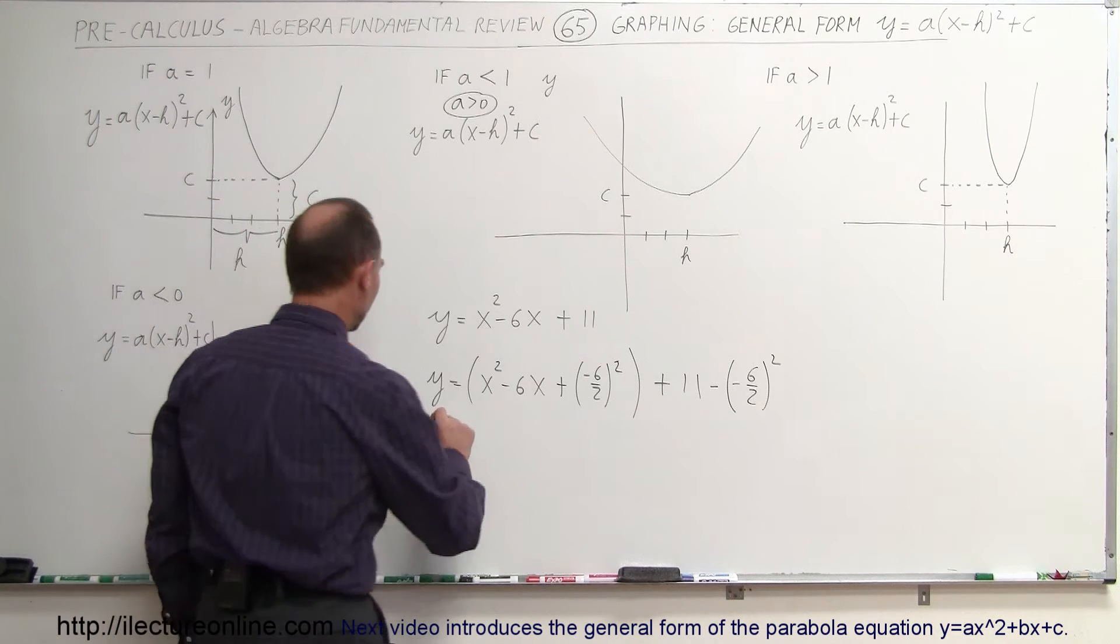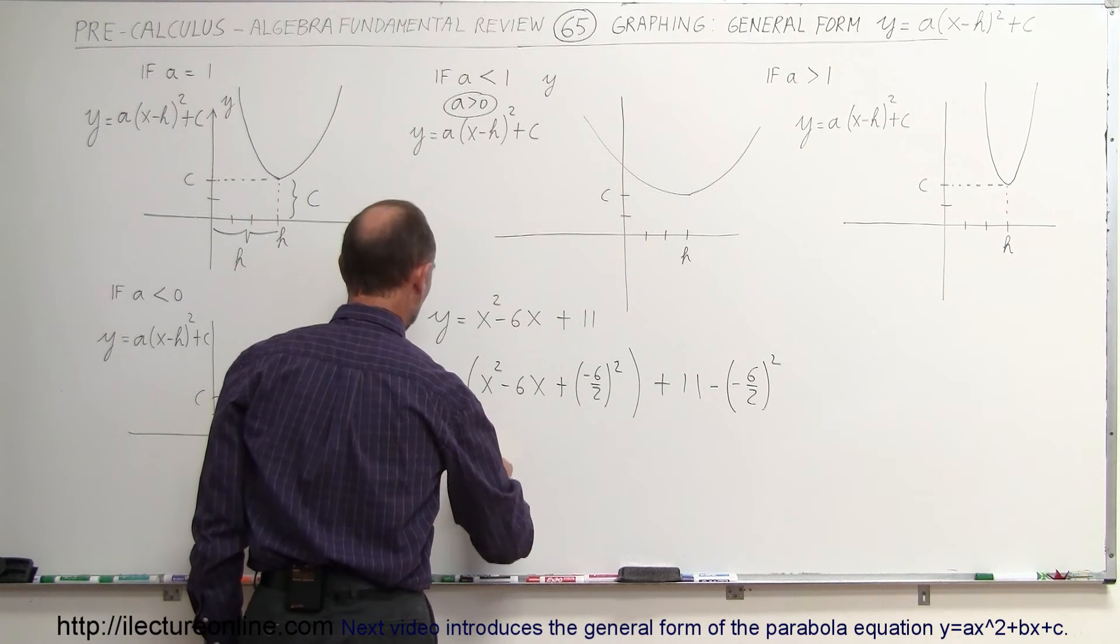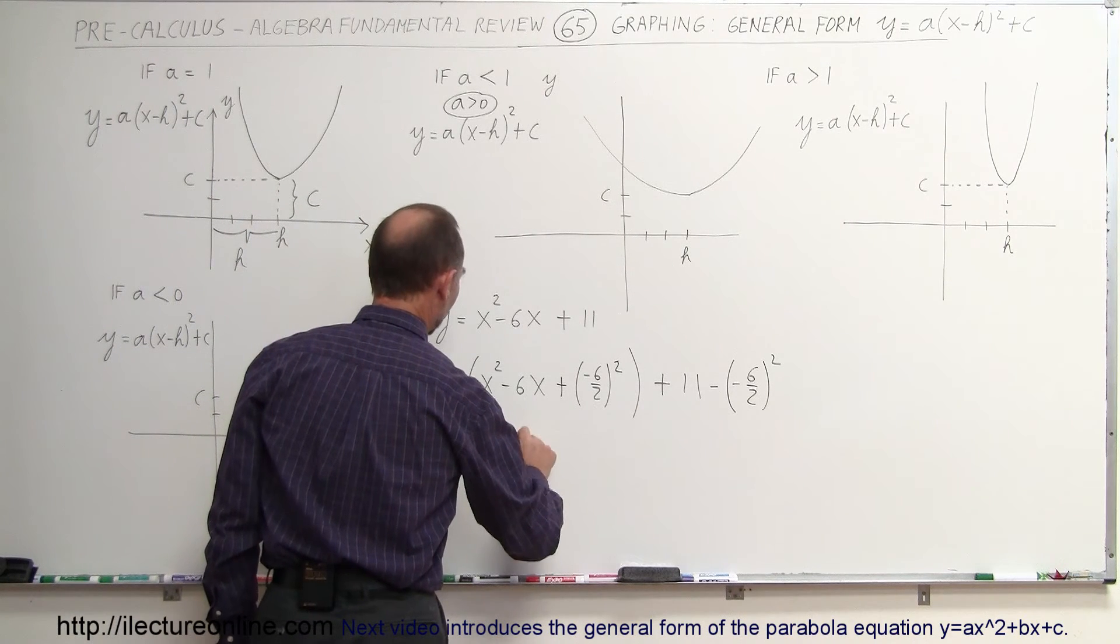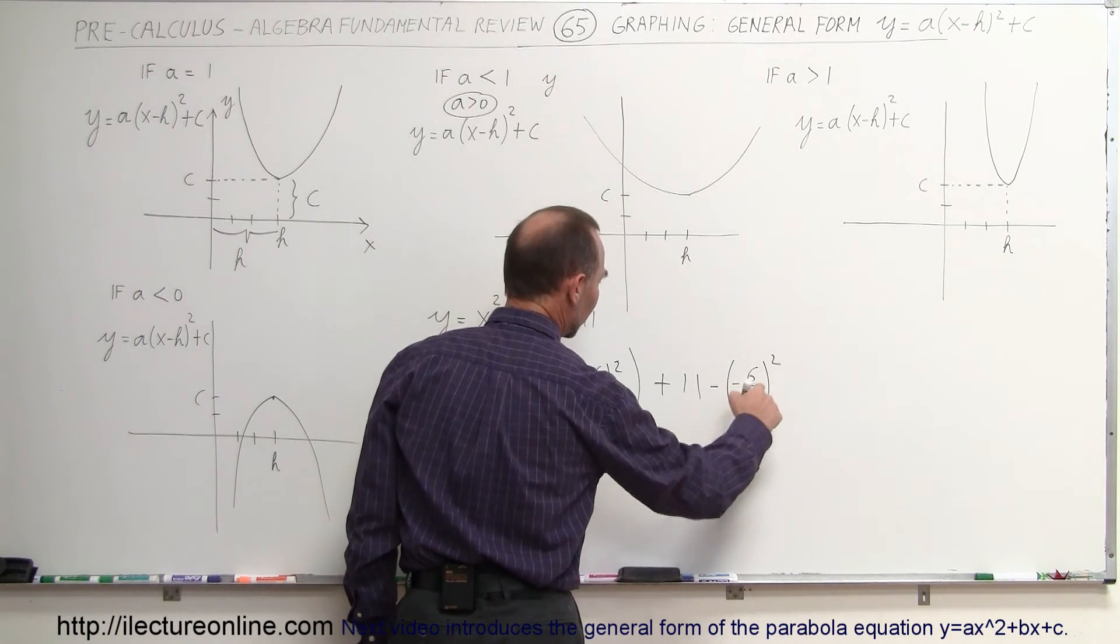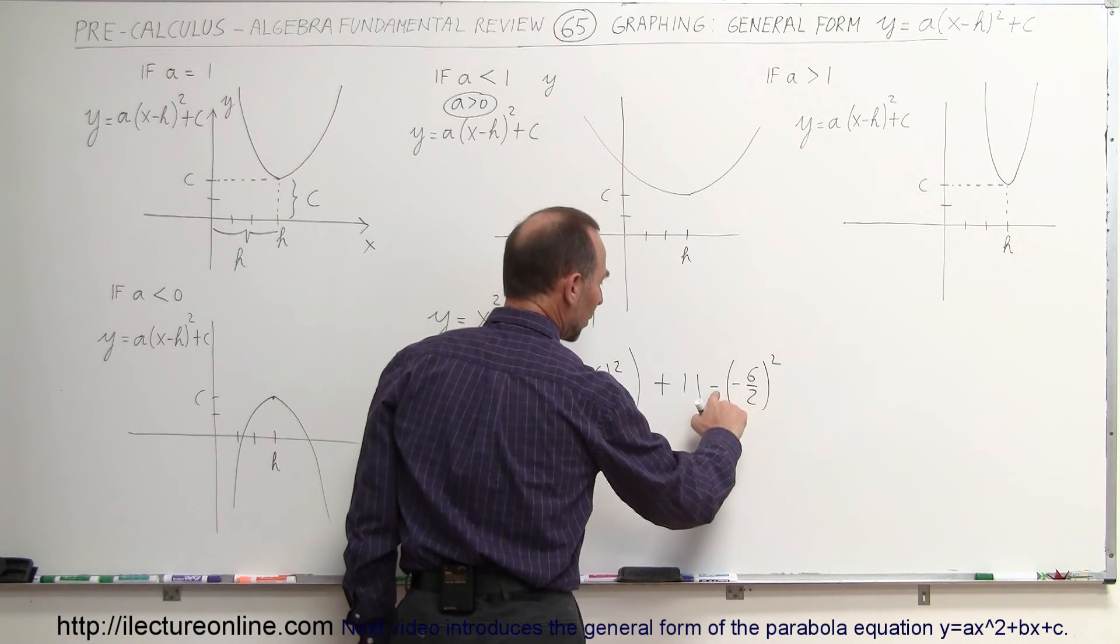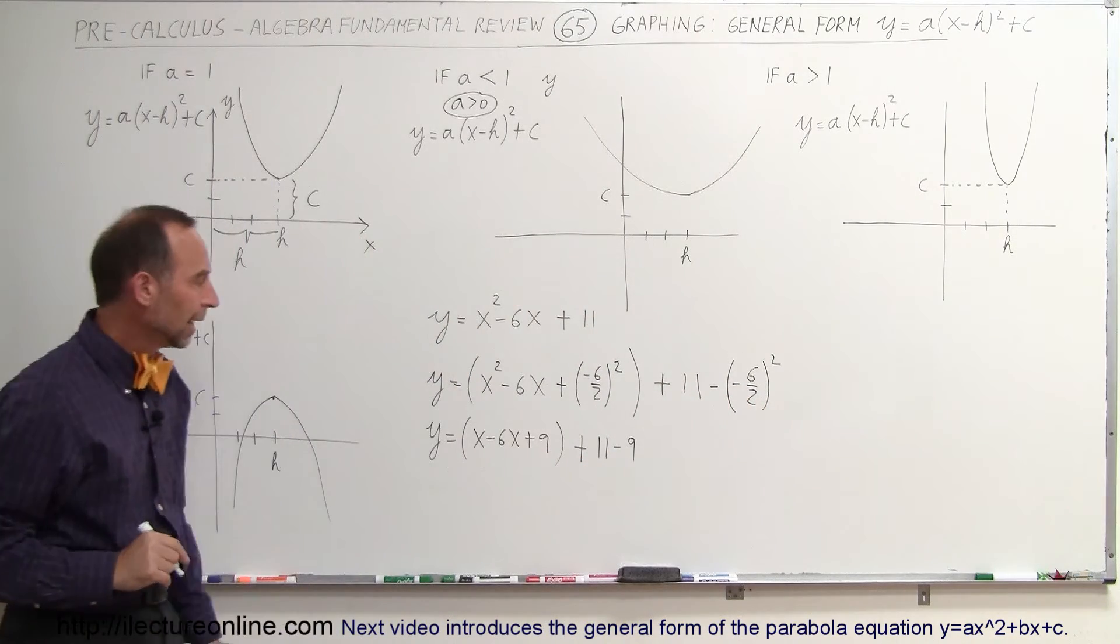Now I can simplify this. This becomes y equals x squared minus 6x plus 9, and this would be plus 11 minus 9, because this will negate the negative sign, but we still have the negative sign over there.